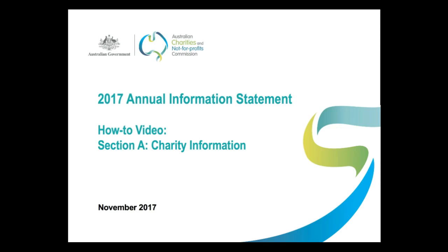Hi and welcome. This video is designed to help you fill in Section A of your 2017 Annual Information Statement. Section A covers a lot of basic but important charity information. Information contained in answers to questions in this section will appear on the Charity Register, unless the ACNC has approved a request from you that specific details be withheld from public view. Because of this, it's important that you get this information correct.